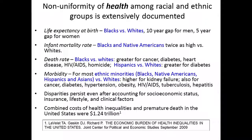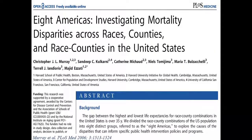The combined cost of health inequalities and premature death in the United States was $1.24 trillion, as shown by my former colleagues Tom Lavese and Darrell Gaskins. I always like to say that could have paid for health care reform — that $1.24 trillion.